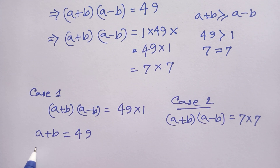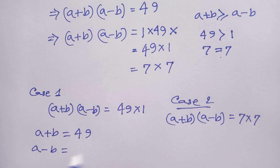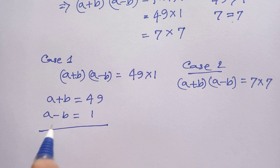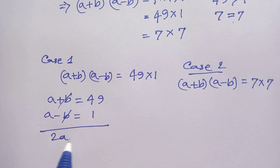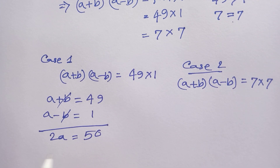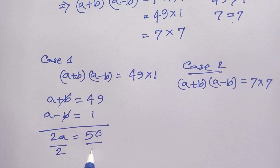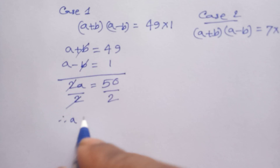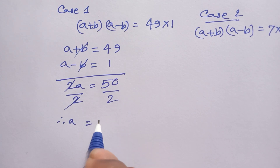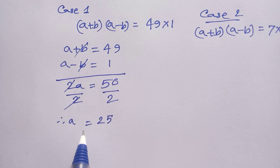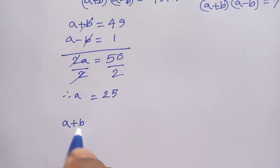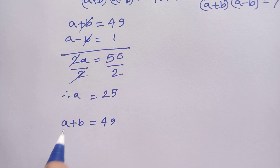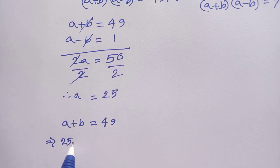And a minus b is equal to 1. Now we add these two equations, so b cancels out. We have a plus a, which is 2a, equals 49 plus 1 which is 50. We divide both sides by 2, so the two cancels, giving a equals 50 divided by 2, which is 25. Now we put the value of a into the first equation: a plus b equals 49.